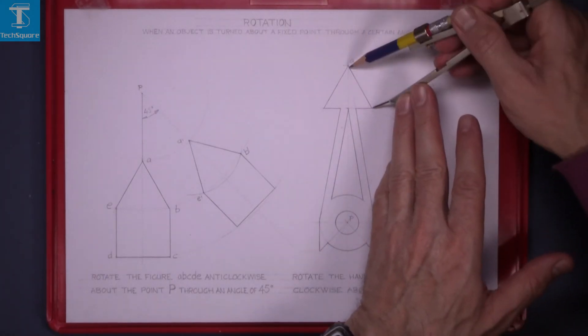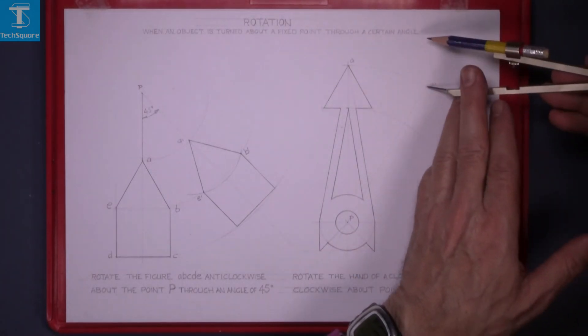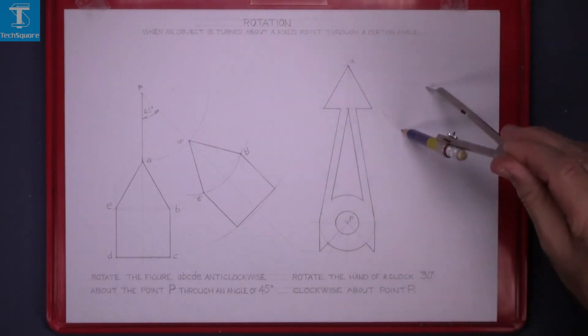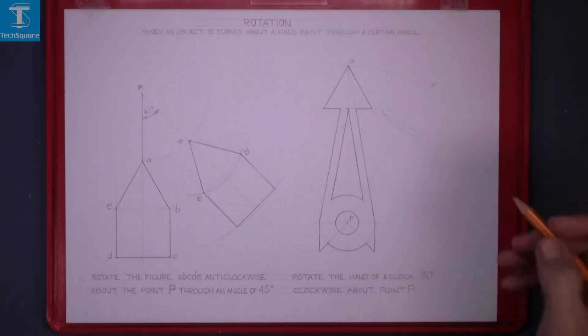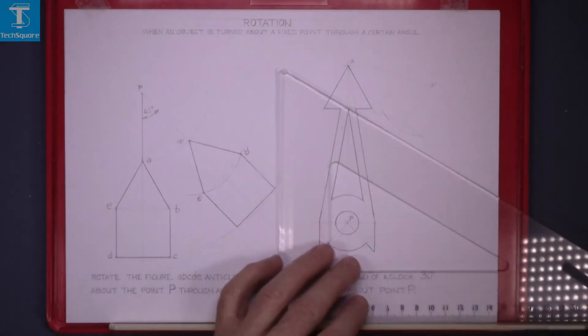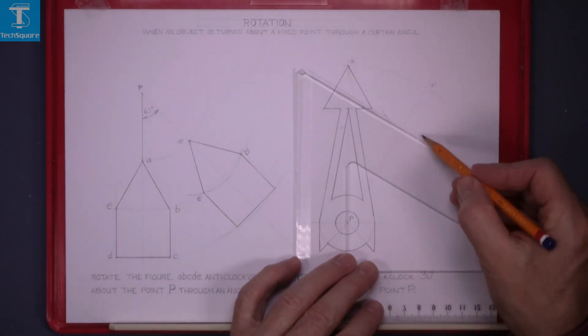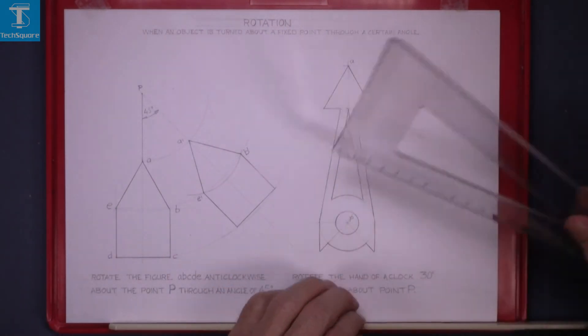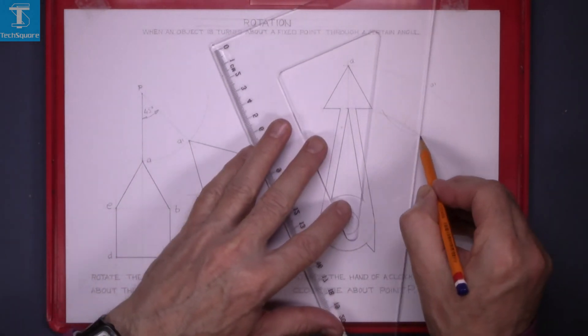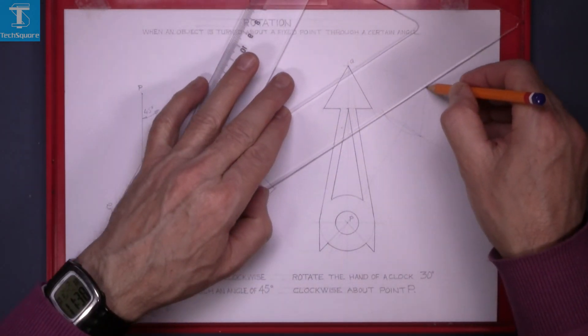Set the compass to the length of one of these sides, put the point of compass in the new A and that gets the two points. Line in that there. And that's the top of the hand.